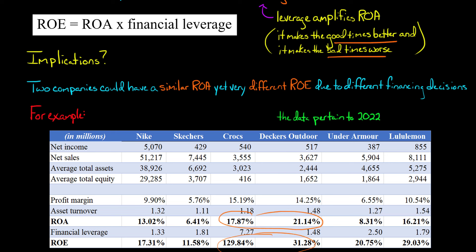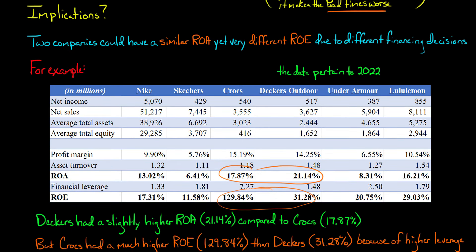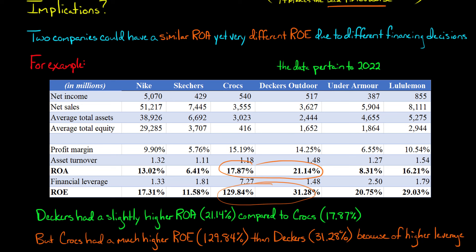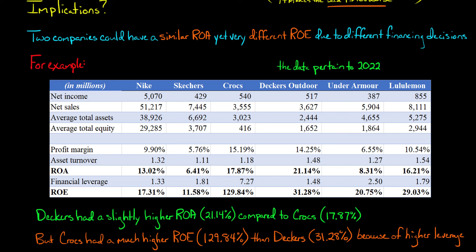When it comes to ROA, Decker's actually had a higher return on assets than Crocs — 21.14% versus 17.87%. So Decker's did a better job generating profit given the assets it had. But these companies made very different financing decisions. Look at the financial leverage for Crocs — much higher than Decker's Outdoor Corporation. That means Crocs had an ROE of almost 130% compared to just 31% for Decker's Outdoor.